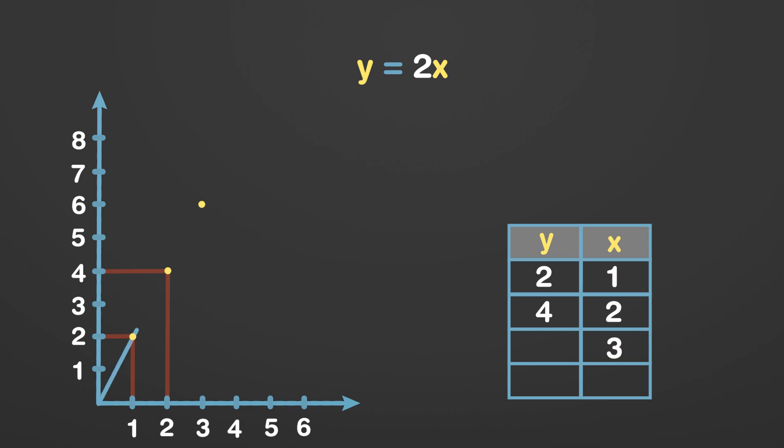So, y keeps on changing for different values of x, and that's why we can call y a dependent variable as its value is dependent on x value. Since y is dependent on x, we can call y variable as a function of x variable.